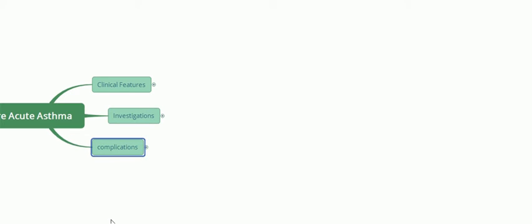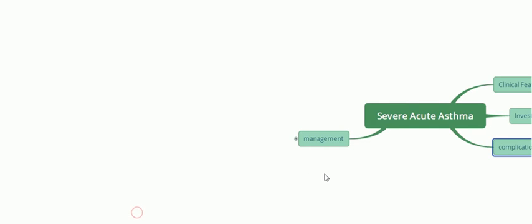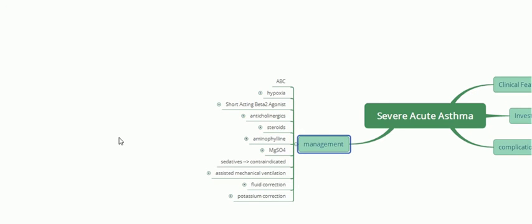For management of severe acute asthma, the first thing to do is Airway, Breathing, and Circulation — ABC — to make sure the patient does not die. Next, hypoxia must be addressed because oxygen delivery is extremely low due to airway narrowing.